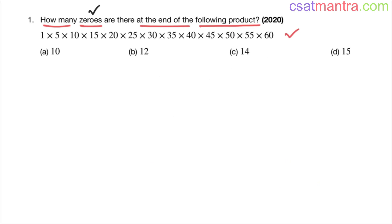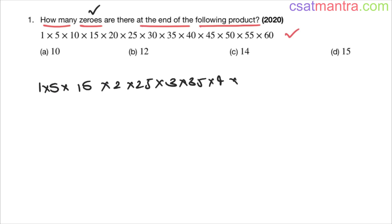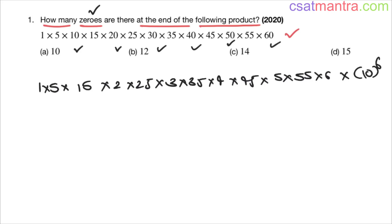I'm rewriting this product as 1 × 5 × 15 × 2 × 25 × 3 × 35 × 4 × 45 × 5 × 55 × 6 × 10⁶. We took the tens out of the multiples of 10 and wrote them as 10⁶. So these are the tens which are directly visible. Zeros mean tens, and tens mean 2×5.